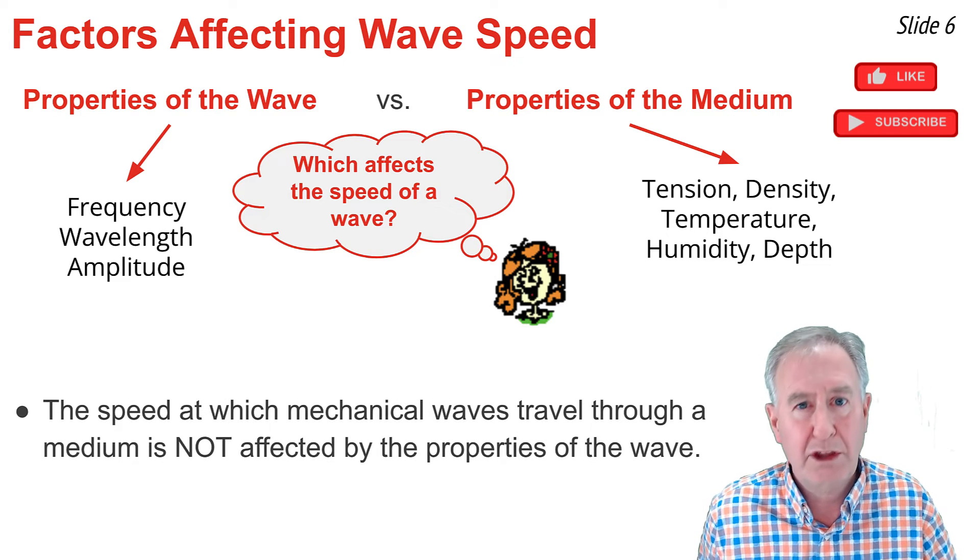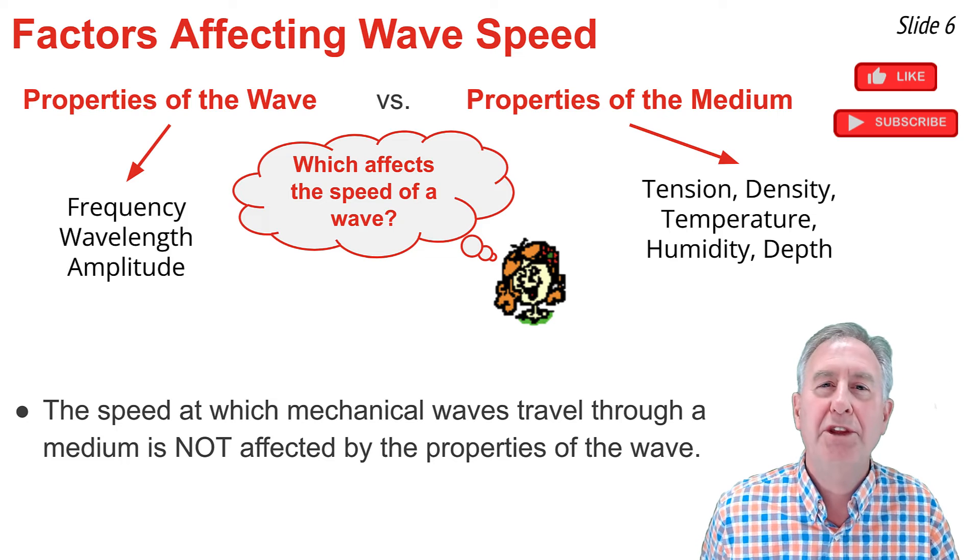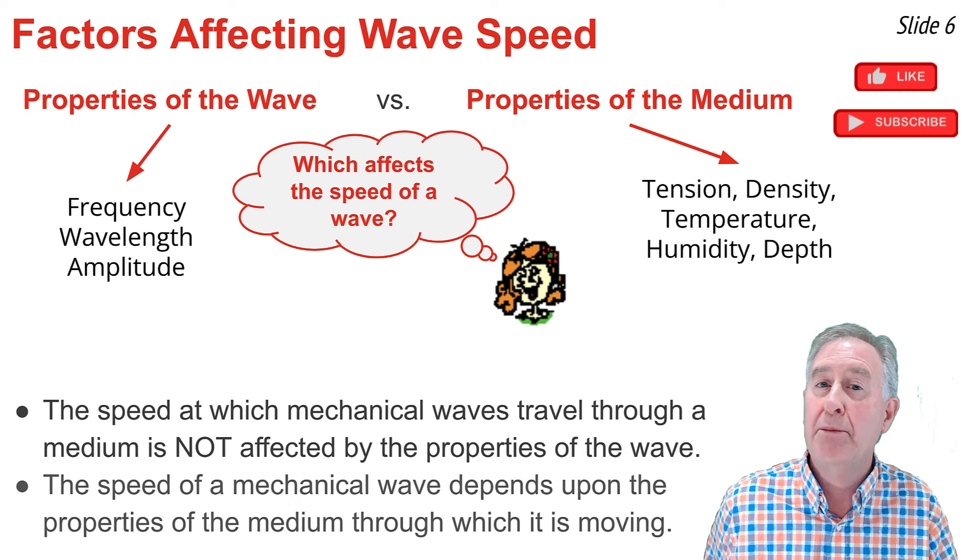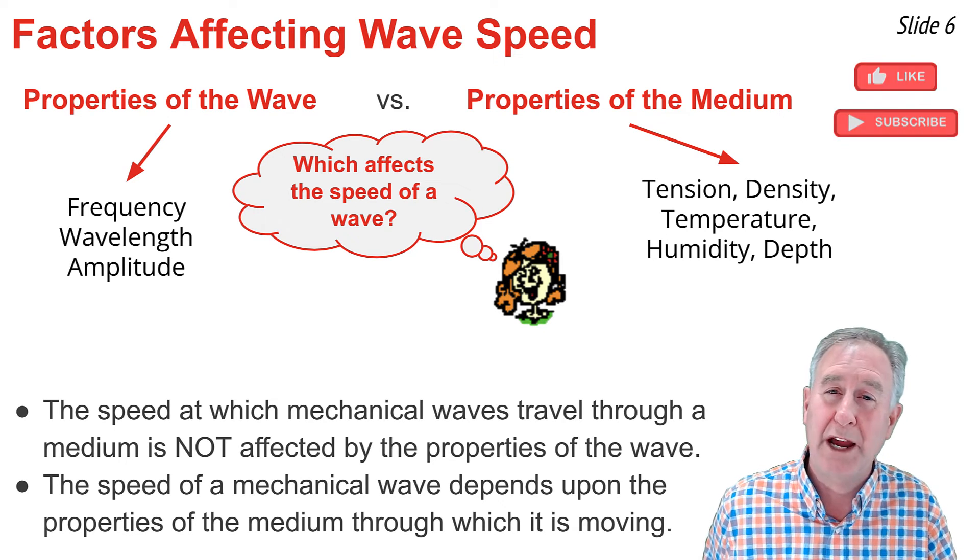The question now arises which one of these two types of properties affect the speed at which waves travel. And the answer is first that the properties of the wave itself will have no effect upon the speed at which a mechanical wave travels through that medium. Instead it's the properties of the medium that affect the speeds at which waves travel through the medium.